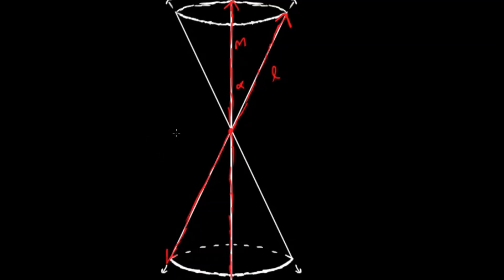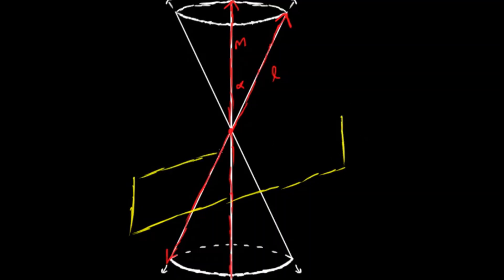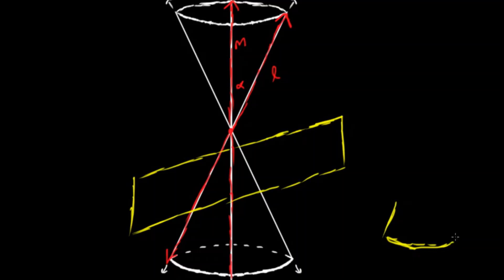So what is a conic section? A conic section is the cross section created by taking a plane. This plane is also infinite and has some geometric attributes that we'll discuss in a second. This plane cuts this double-naped cone and creates a cross section — some sort of shape out of the cone.